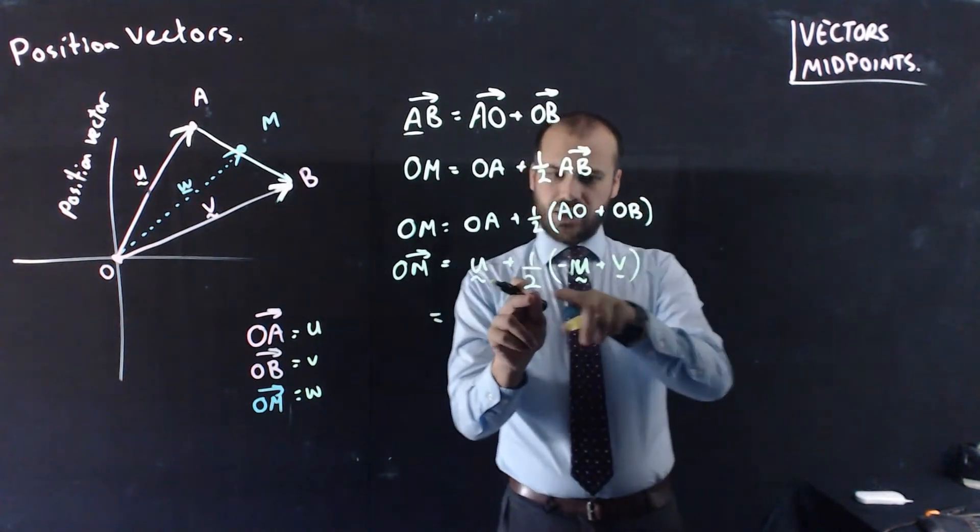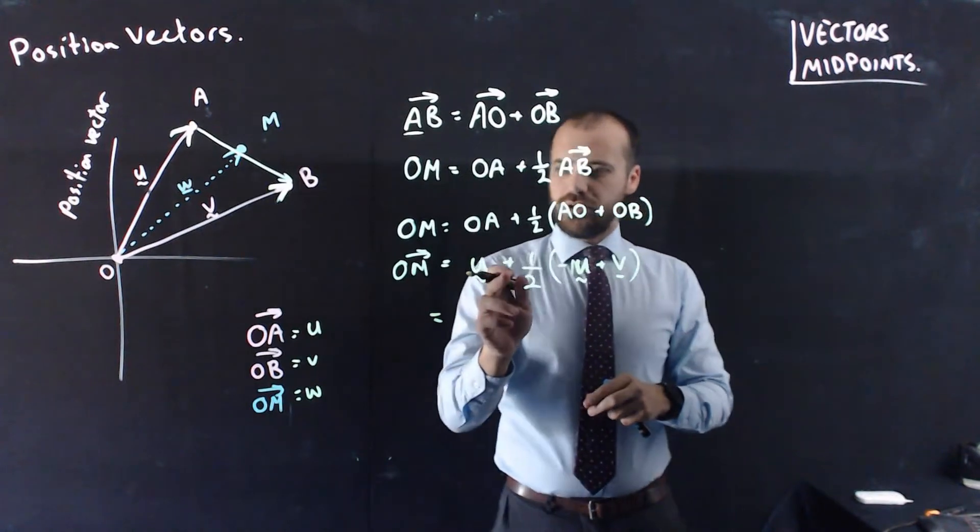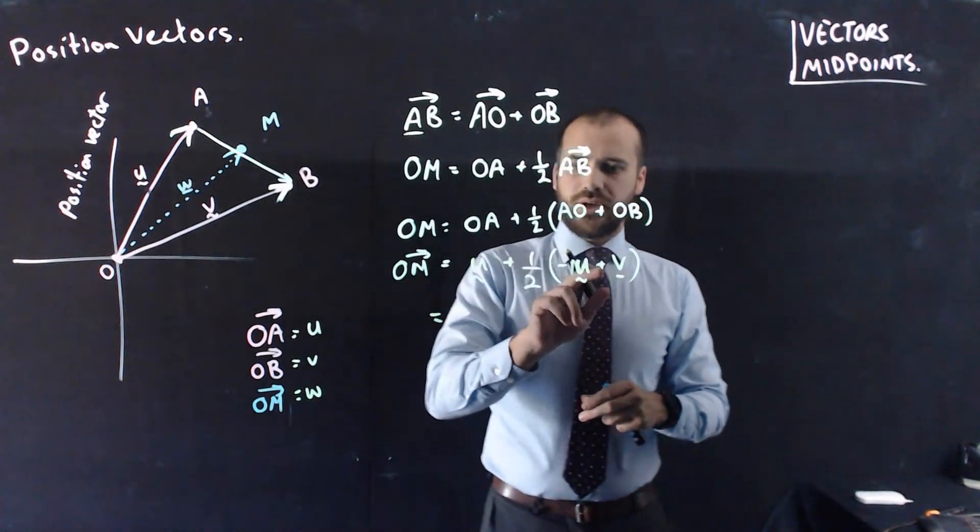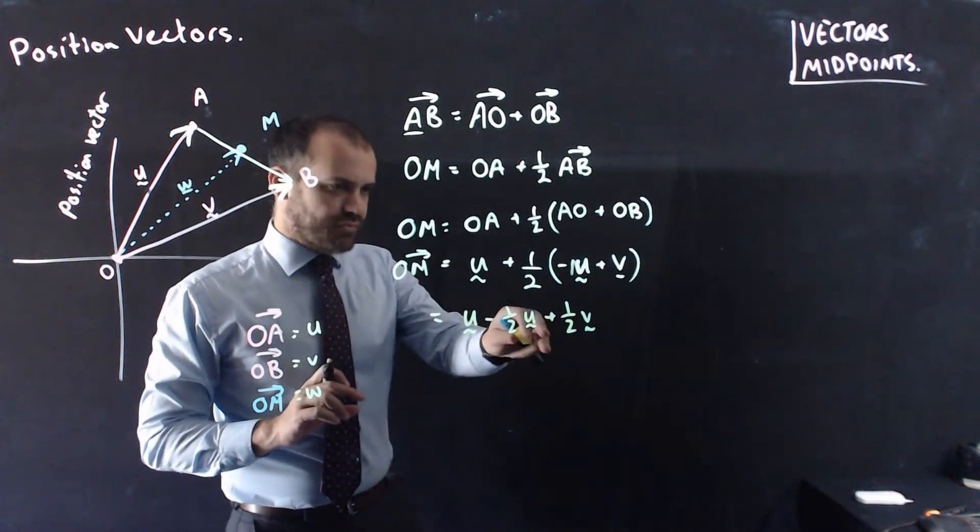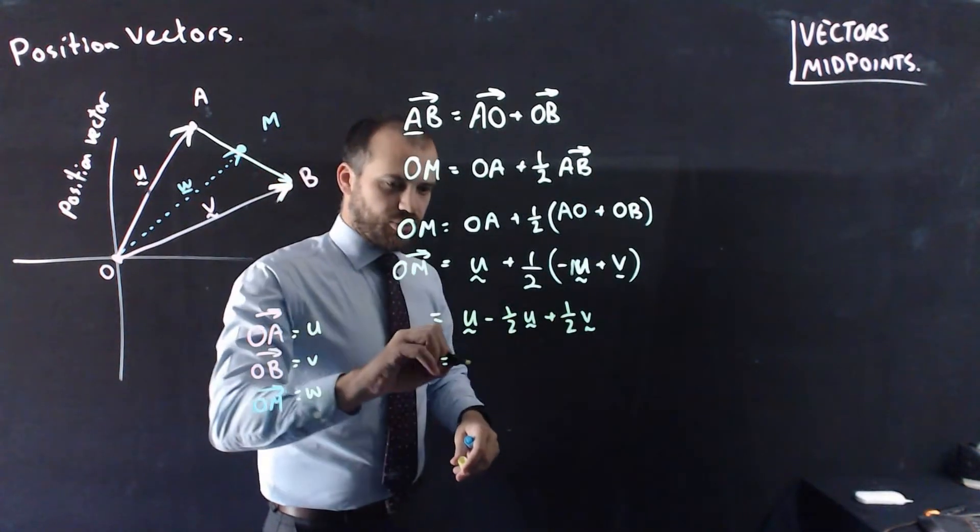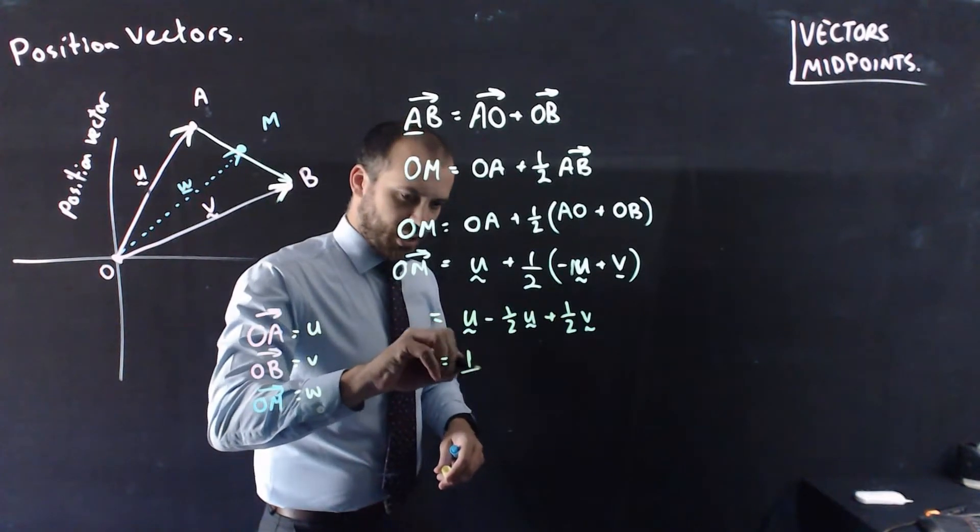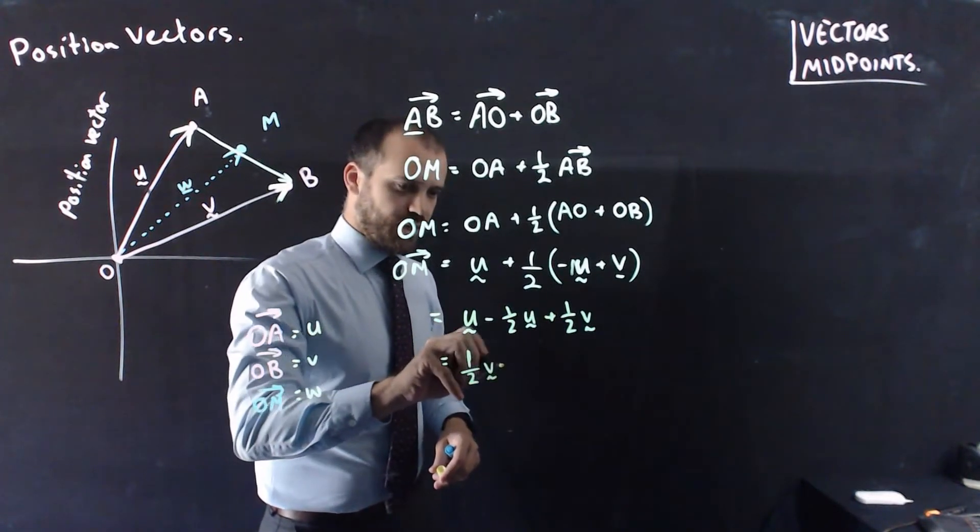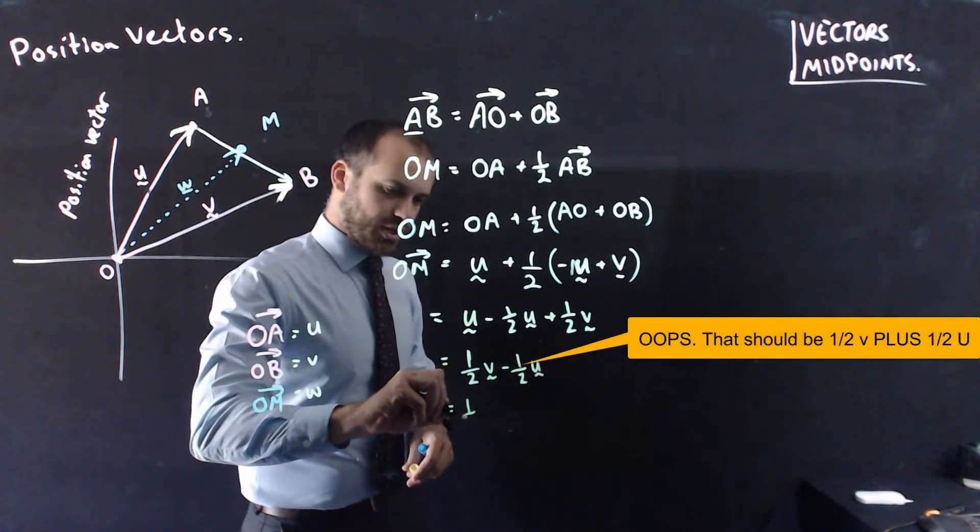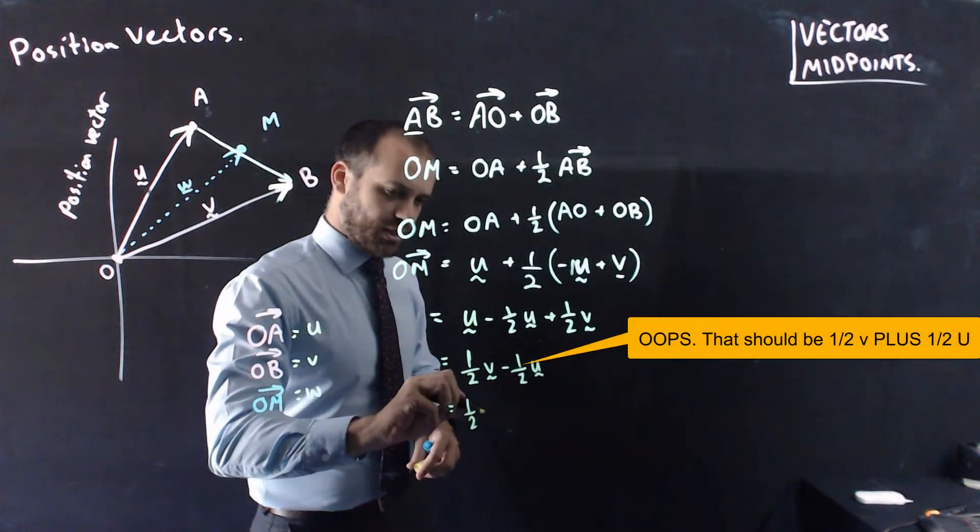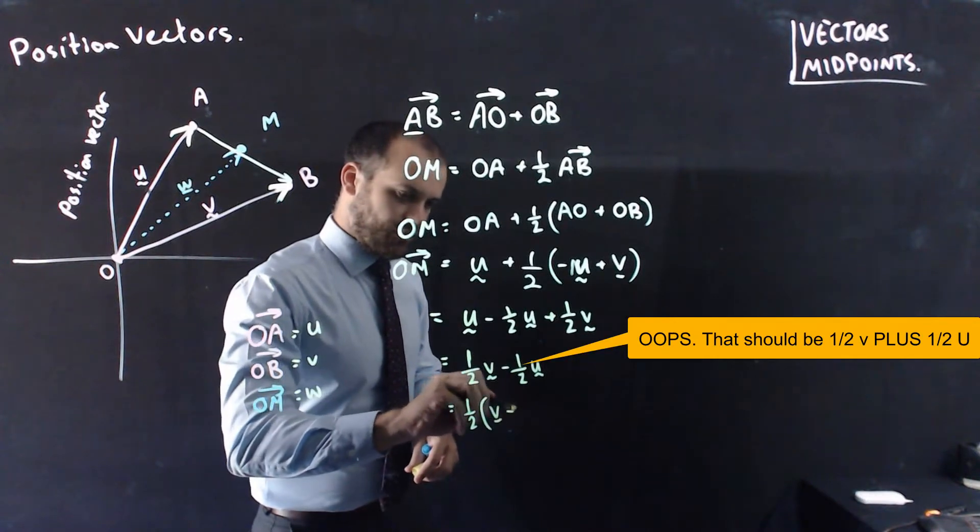Okay, U plus, and then I can use my distributive law, minus half U plus half V, which is U minus half U plus half V, which is the same as one-half of U plus one-half of V, which gives us this really nice formula, half of V plus U.